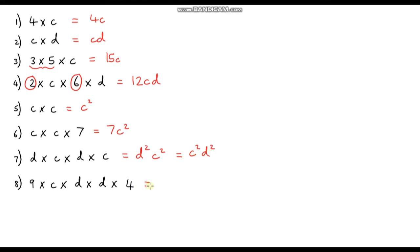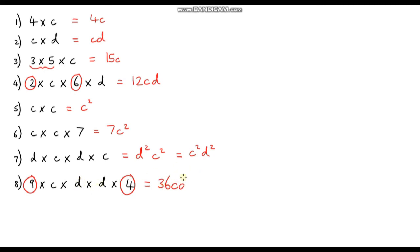Question 8 is a bit longer. Let's do the numbers first — 9 times 4 is 36. Then we've got c, so 36c. Then d times d is d squared. So the final answer is 36cd².